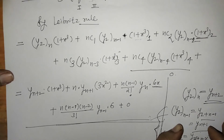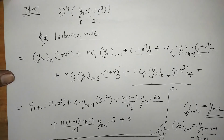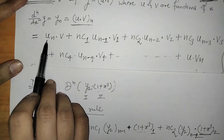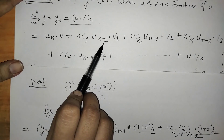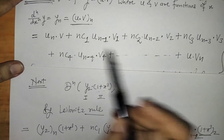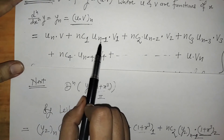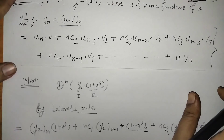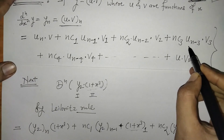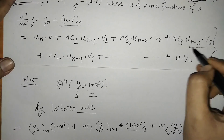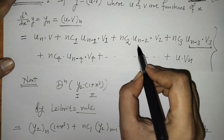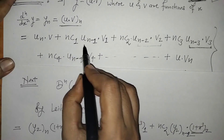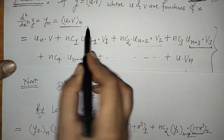In this way we apply Leibniz rule. We note that the derivative of the first function decreases by 1 at each term, and the derivative of the second function increases by 1. Also, the sum of the suffix indices equals yn throughout. This is all about Leibniz theorem.